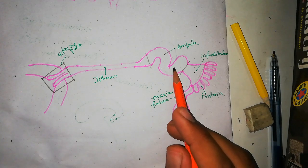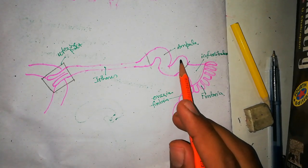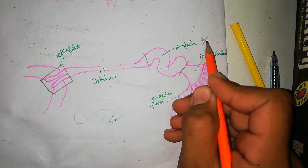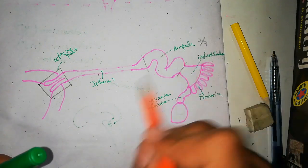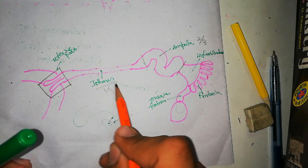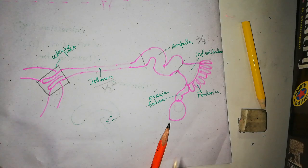These are the parts of the fallopian tube. Ampulla is the largest part. I haven't shown it here as the largest. This is a tortuous course and that is why it will be the largest, ampulla making two-thirds of the fallopian tube and isthmus making one-third of the fallopian tube. The uterine part and the infundibulum are minor.